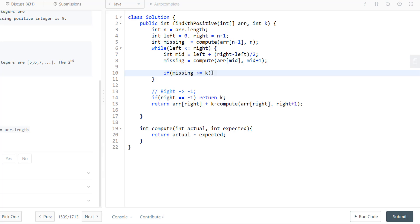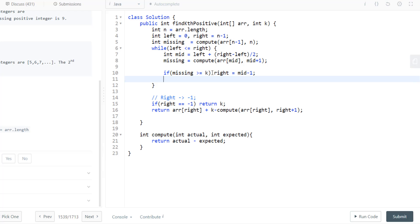If this missing count is greater than or equal to k, we can say that the number lies in left, so we do right equals mid minus 1. Otherwise we do left equals mid plus 1. That's all, let's run this code.